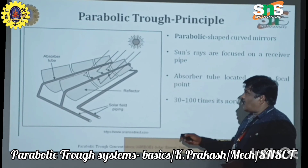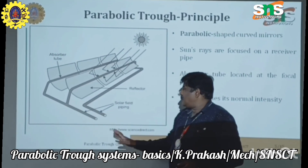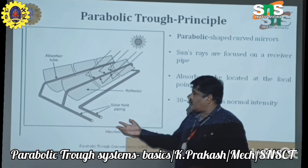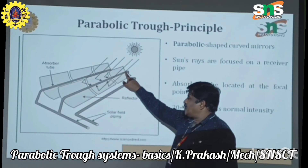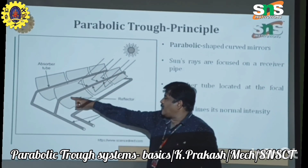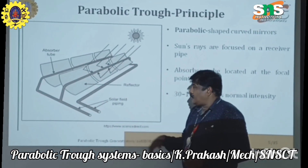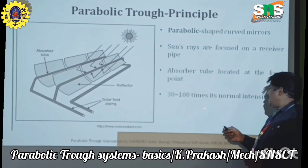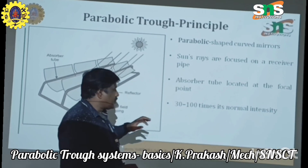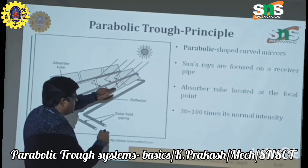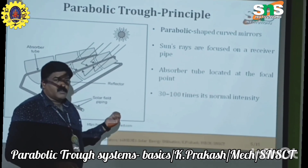These are the solar field — this complete area is called the solar field. There are pipings available. The fluid which is to be heated passes through the inlet pipe, and the absorber tube absorbs the heat so the fluid gets heated. All the heated fluid comes out through a single outlet. The sun's rays are focused on the receiver and the absorber tube is located at the focal point. This concentration is 30 to 100 times more than normal heating.